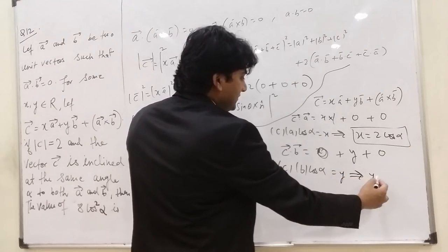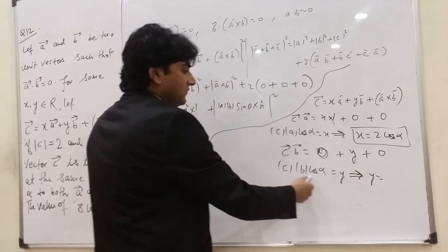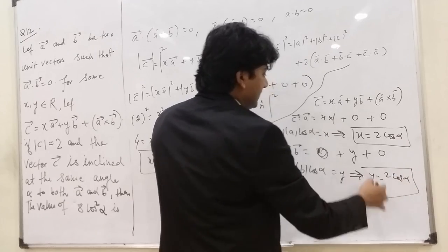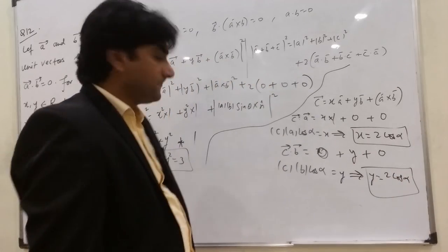So here also we got y equals, this is 2, this is 1, cos alpha. So this is 2 cos alpha. So y is also 2 cos alpha.